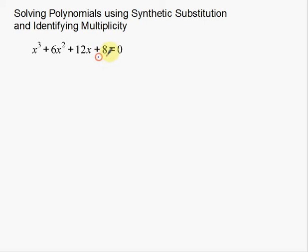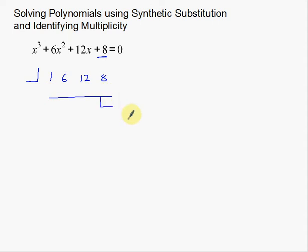So now what I'm going to do is look at the constant 8 and the leading coefficient 1. Those numbers are actually going to help us figure out what we can divide by. In this case, we're going to use factors of 8 to figure out what to use for synthetic substitution. I'm going to set up synthetic substitution with my coefficients: 1, 6, 12, and 8 — no gaps.